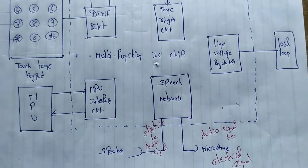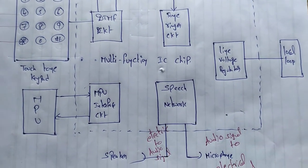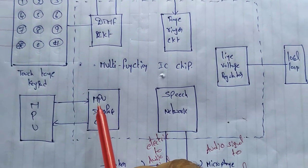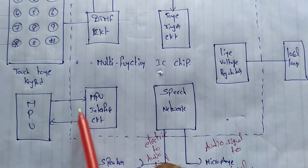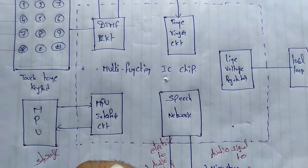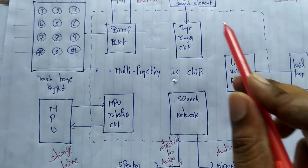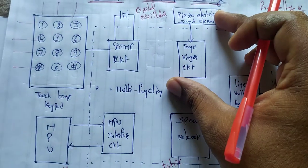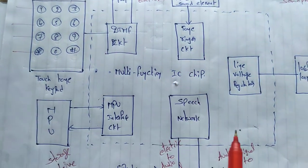We have two speech networks. We have a phone and a storage device. We have a microprocessor unit, also called MPU. There is an interfacing circuit connected to the circuit, along with dialing, a ringtone circuit, a speech network, and an MPU network.